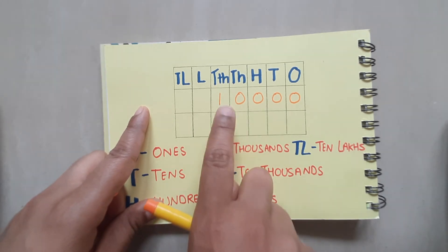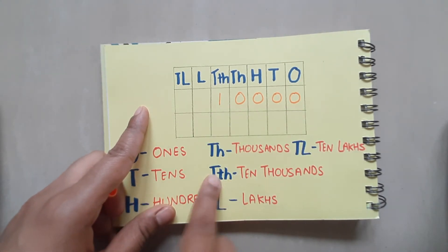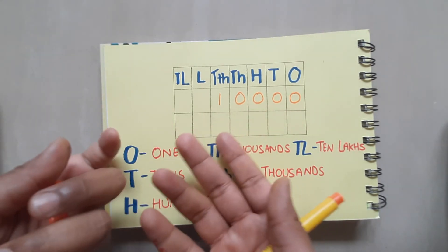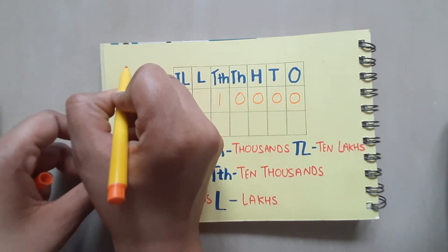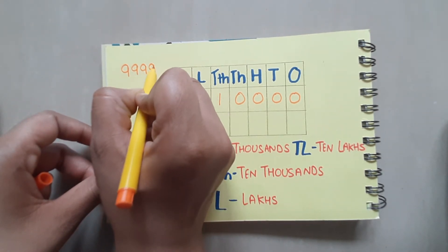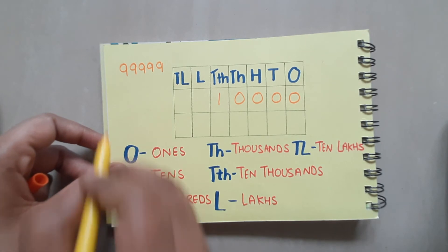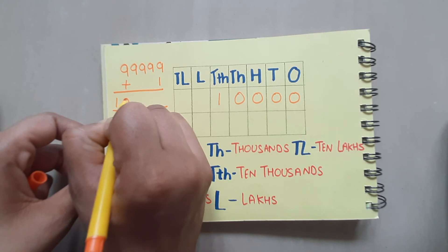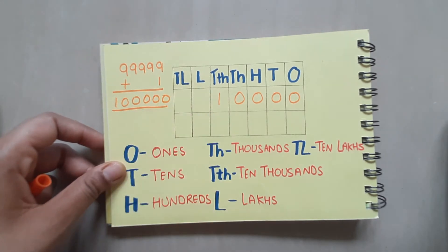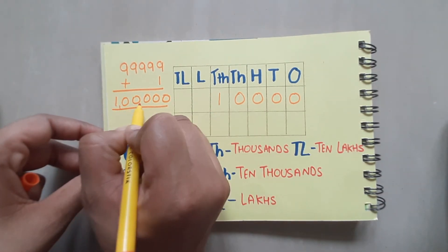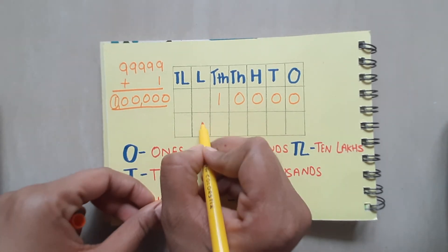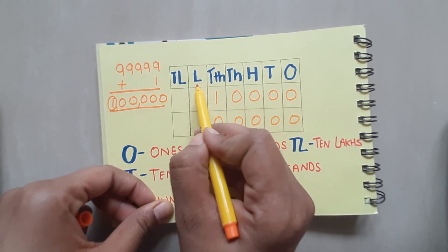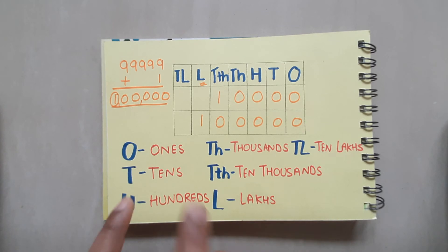So, similarly, if I talk about the smallest 5 digit number, this is 10,000. If I have greatest 5 digit number, it will be 99,999. And if I add 1 to it, what do I get? I get the smallest 6 digit number. That is, a new place has been introduced and this new place is lakhs.